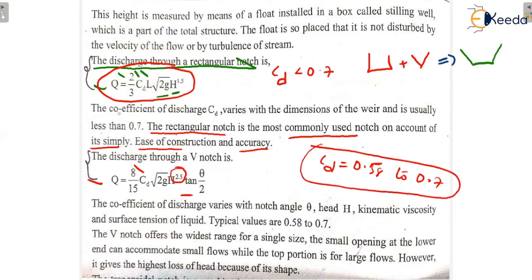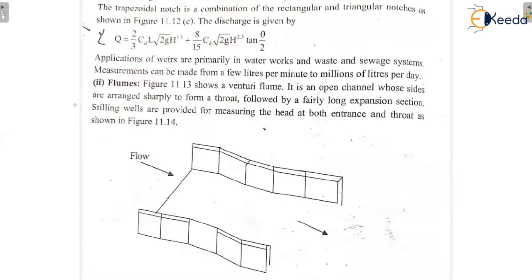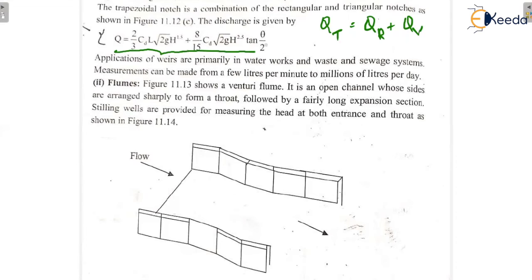To get the equation for the trapezoidal notch, we add the combination of the rectangular and V-notch. The volume flow rate through the trapezoidal notch equals the volume flow rate through the rectangular notch plus the volume flow rate through the V-notch. These notches are used for the measurement of various flow rates, from a few liters per minute to millions of liters per day.